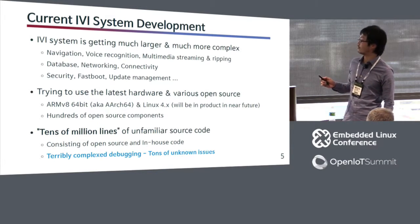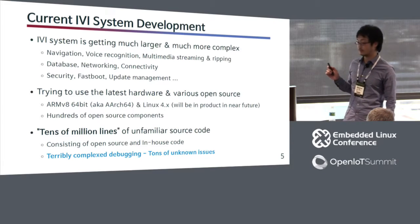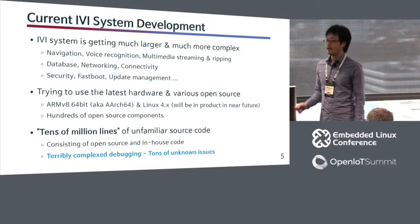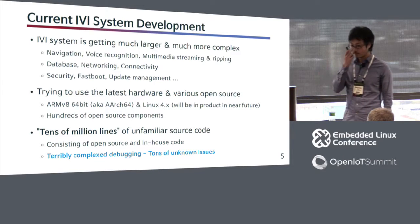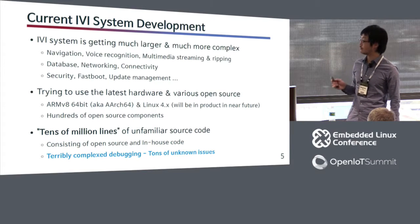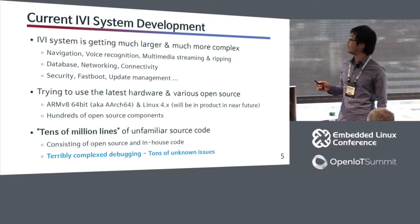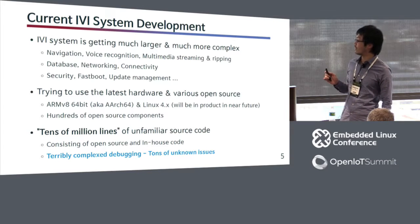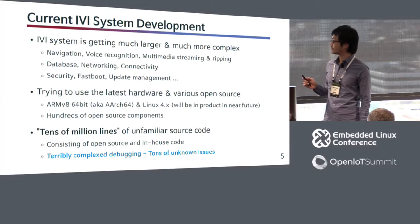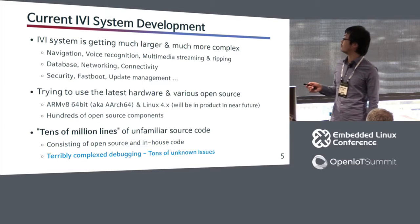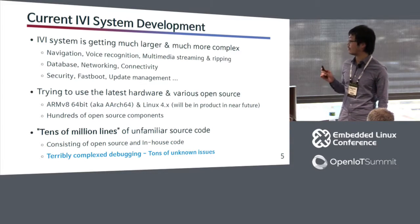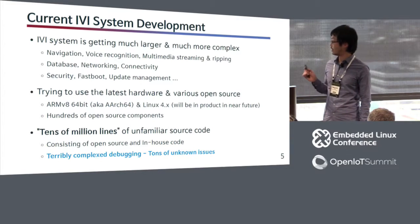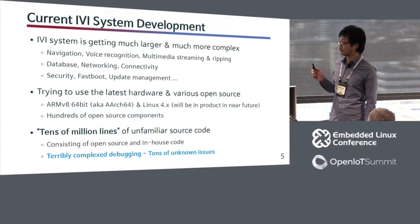Both of them are not in product yet, but will be in the near future. We are also trying to use hundreds of various open source components. As a result, the software increases to tens of millions of lines of unfamiliar source code, consisting of open source and in-house code. Sometimes in-house code is much harder to understand than open source.